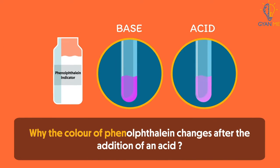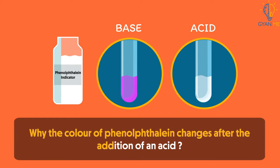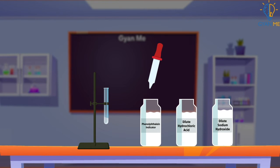Students, have you ever thought about why the color of phenophthalein changes after the addition of an acid? Well students, when we add phenophthalein to the base, its color turns pink by the effect of base. When we add an acid that is dilute hydrochloric acid to it, then at a certain point the solution becomes colorless.